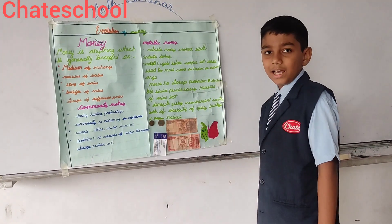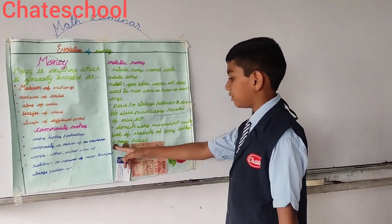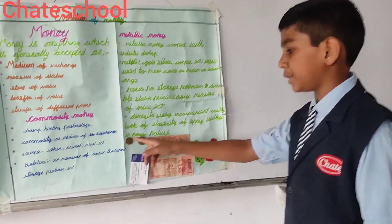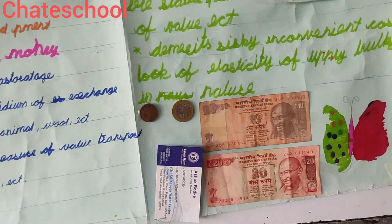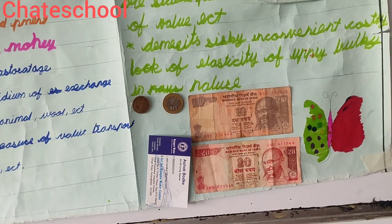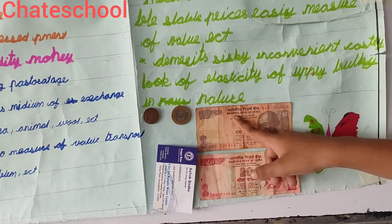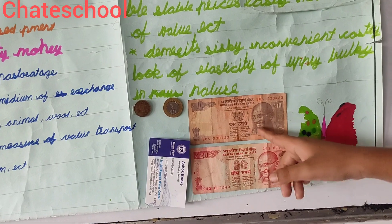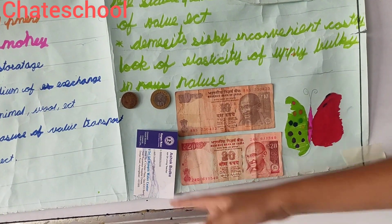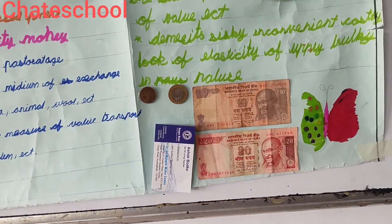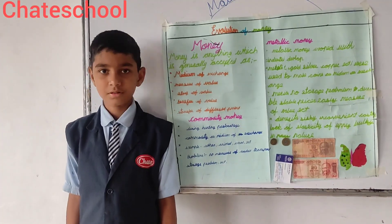Metallic money has two examples: first is 5 rupees coin and 10 rupees coin. Paper money also has two examples: 10 rupees and 20 rupees, and this digital card. Thank you.